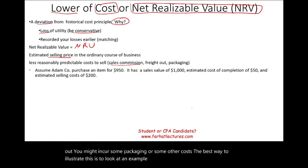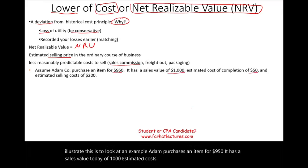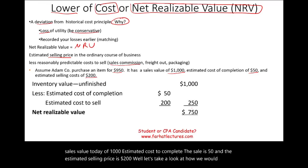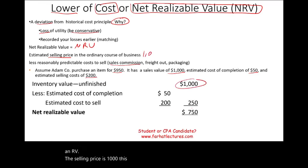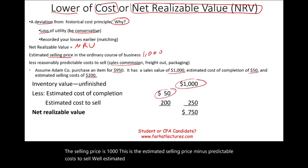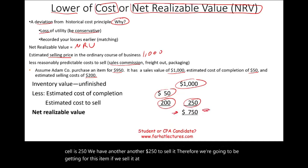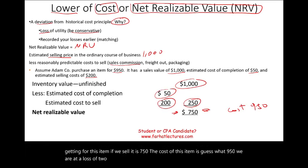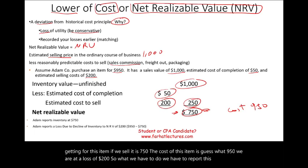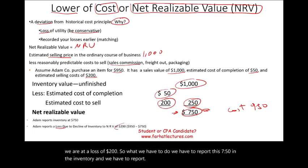Adam purchases an item for $950. It has a sales value today of $1,000. The estimated cost to complete the sale is $50, and the estimated cost to sell is $250. So NRV = $1,000 minus $50 minus $250 = $750. The cost is $950, meaning we have a loss of $200. We report $750 in inventory and record a $200 loss on the income statement.